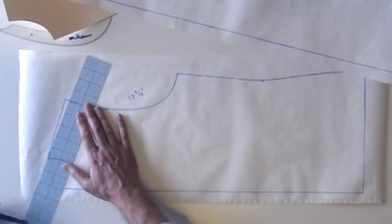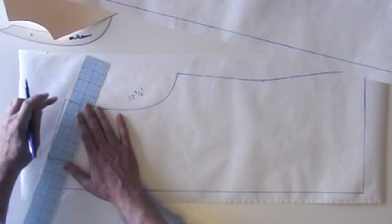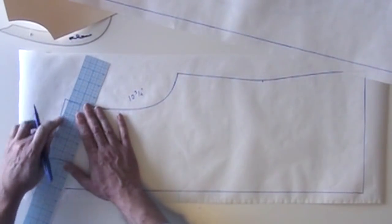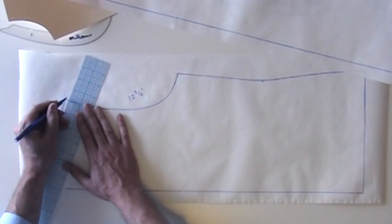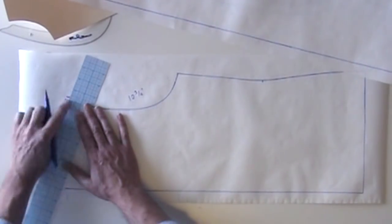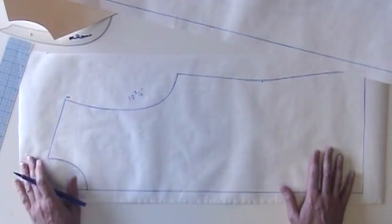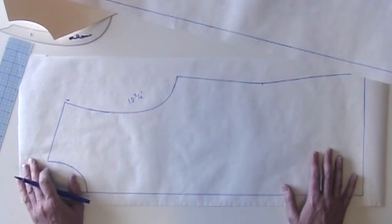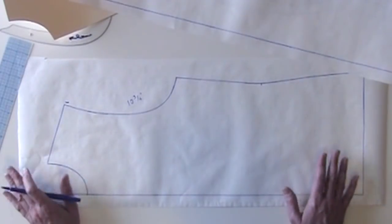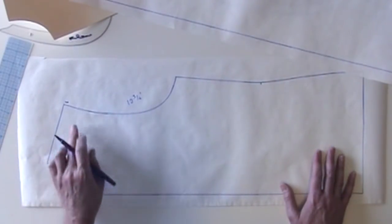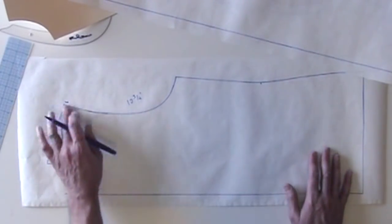If you're working with a stretchy knit or a very supple woven fabric, you can sometimes steal a little out of your shoulder slope, angle it down about a quarter inch here. Again, that will work with a stretchy knit or a supple woven, but it won't work for a crisp woven. So in this case, I'm not going to do that.